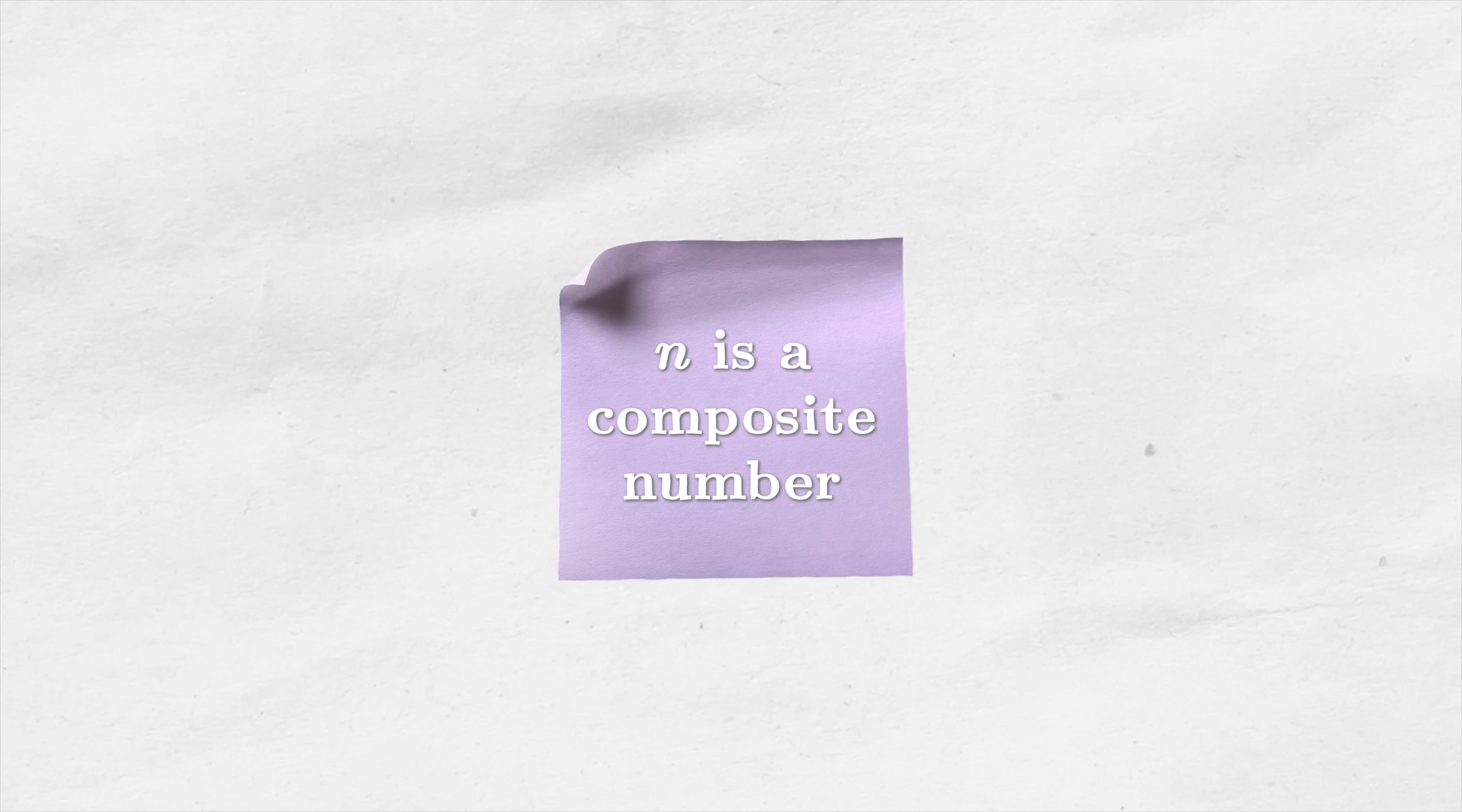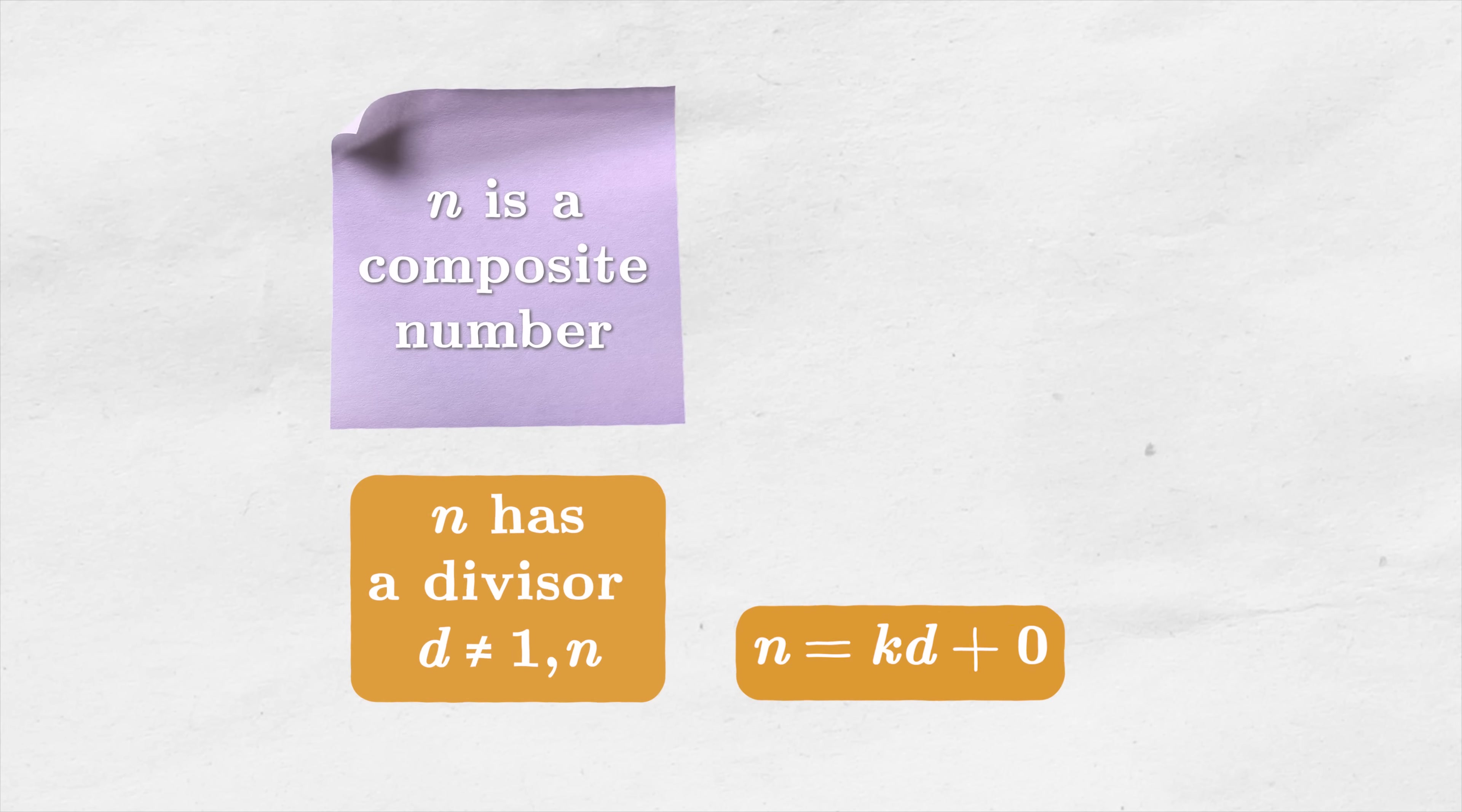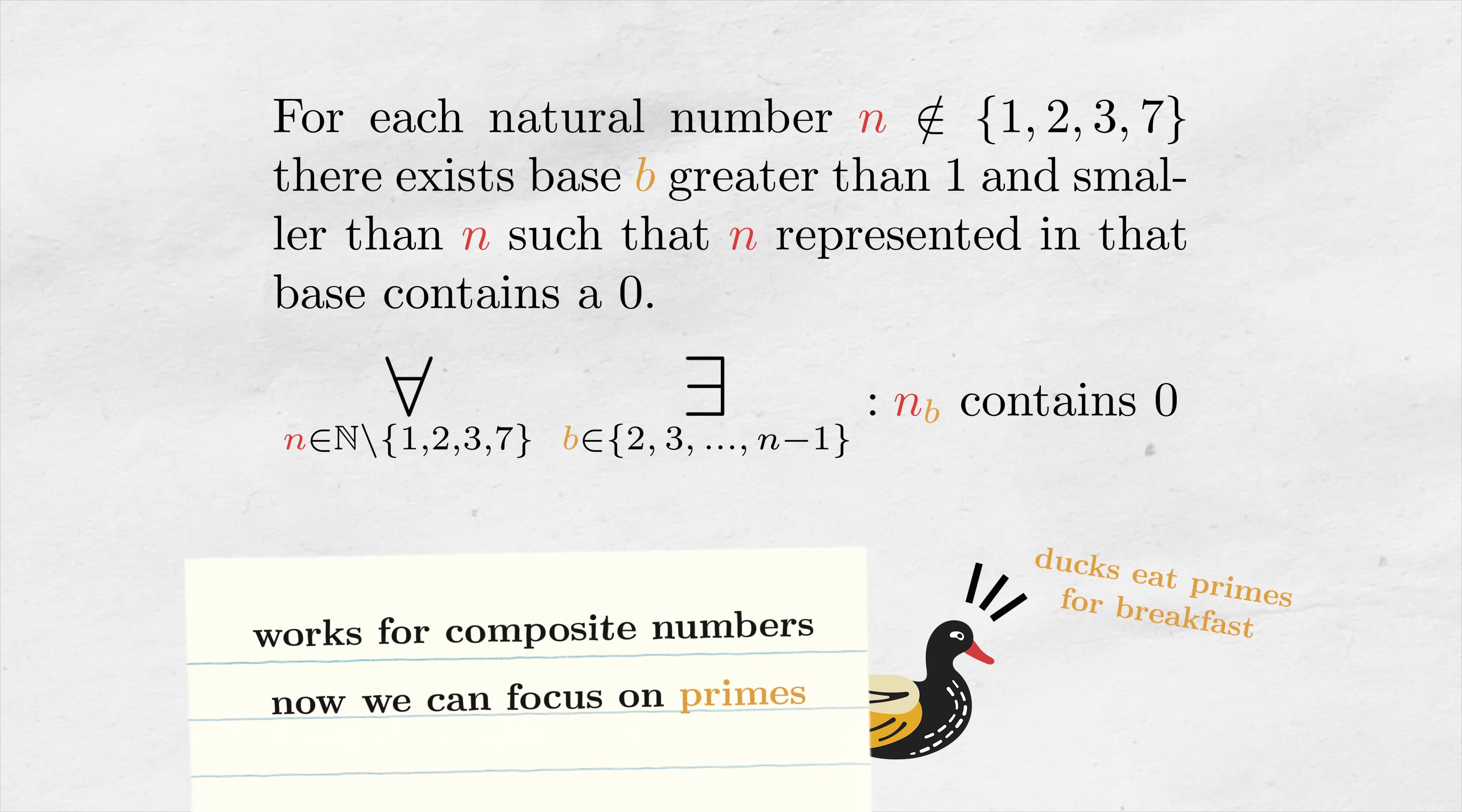First one is that whenever n is a composite number, so it has at least one divisor d that is not 1 or n, then n divided by d leaves 0 remainder, and thus the units digit of n in base d is equal to 0. For this theorem, it means that now we can focus only on numbers that are not composite, which are prime numbers. Exciting and kinda scary.